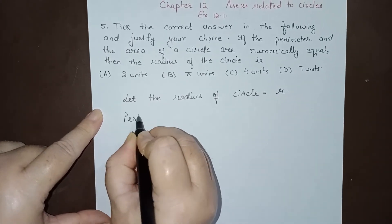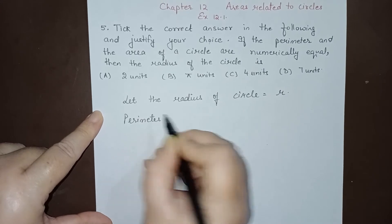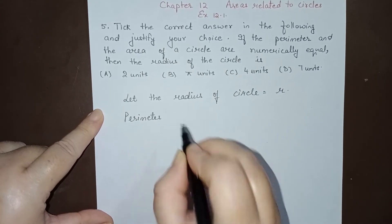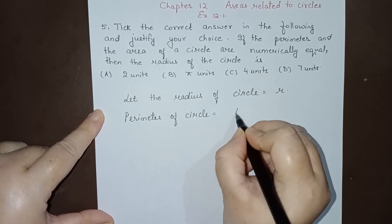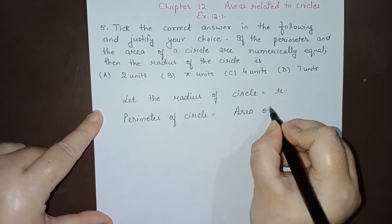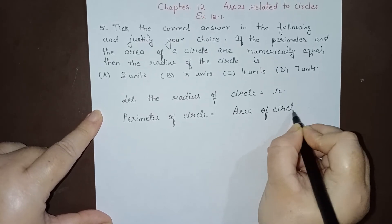saying perimeter, that is circumference. Perimeter means circumference of the circle. Perimeter of circle is equal to area of circle. So